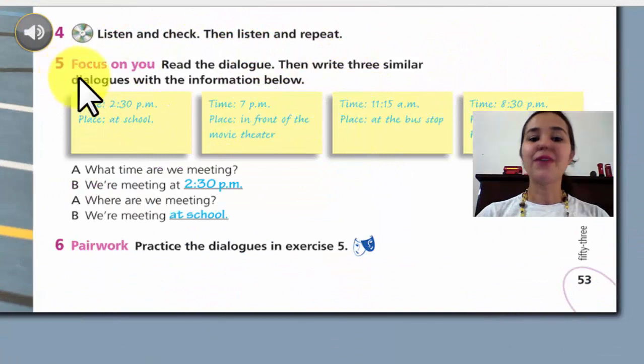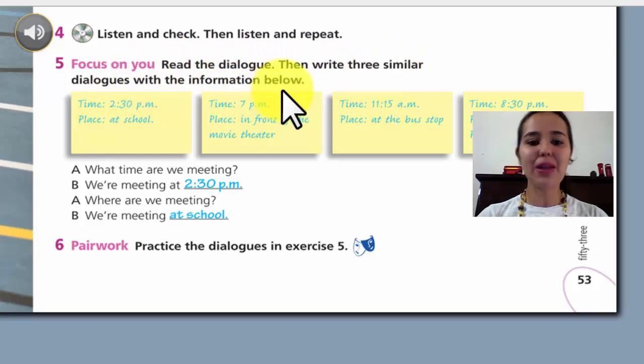Exercise 5. Focus on you. Read the dialogue. Then write three similar dialogues with the information below. For example, time, 2.30 p.m., place, at school. And this is the dialogue.